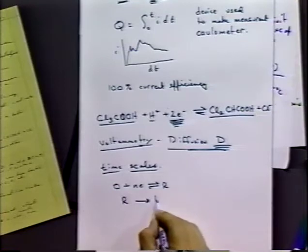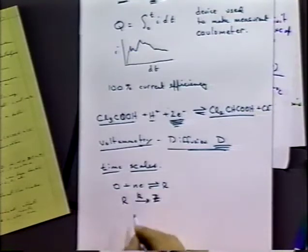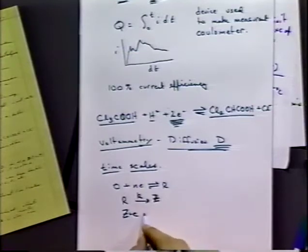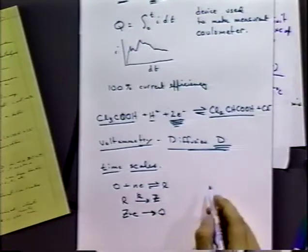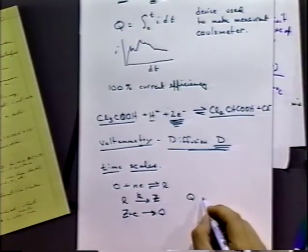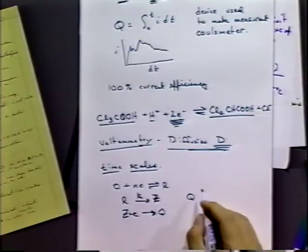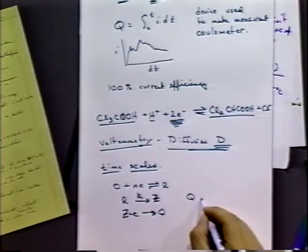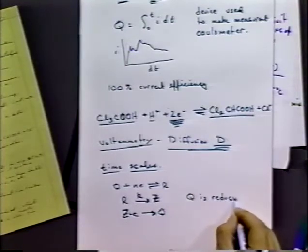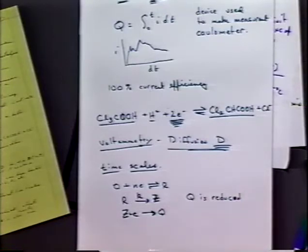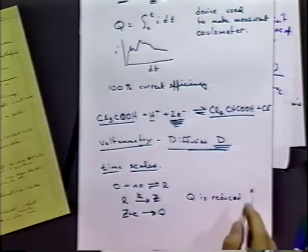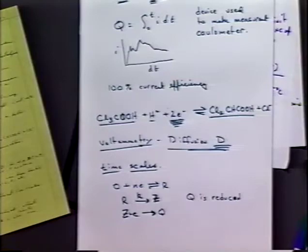This follow-up reaction may or may not be electroactive. If Q can be reduced, which is often the case in some organic systems, or if Z can be further reduced, that will throw off our system because we'll have an additional reaction occurring. It's only really a problem if k is faster than the time scale of the experiment.